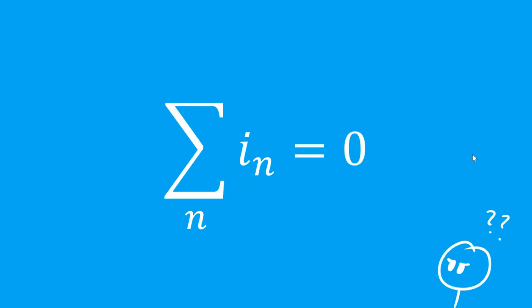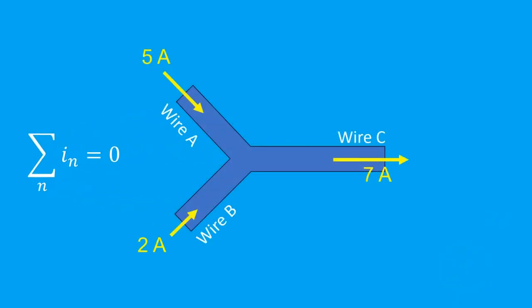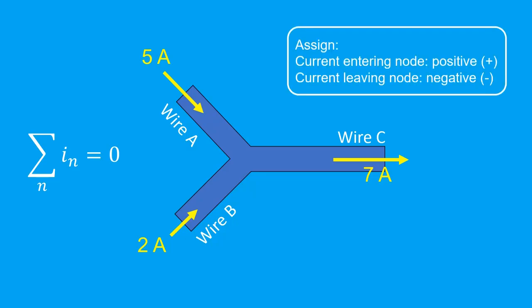So what does this mean? Well, this is where sign conventions come into the picture. First we must assign the current entering the node as positive, and the currents leaving the node as negative.